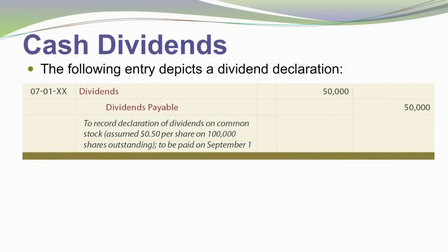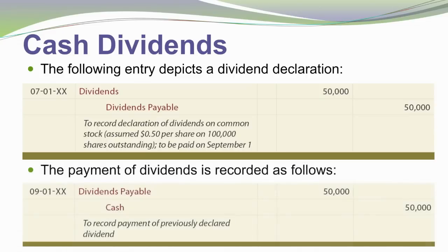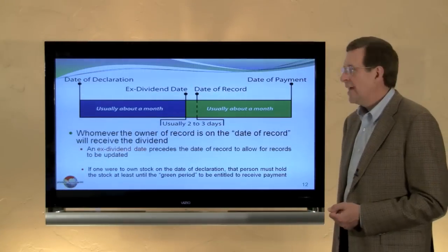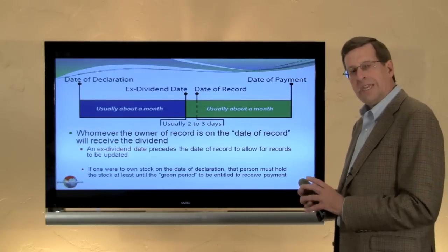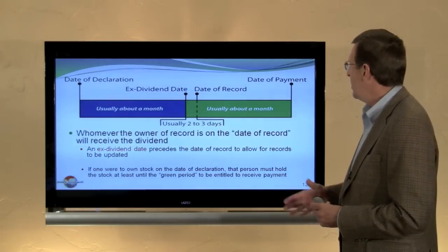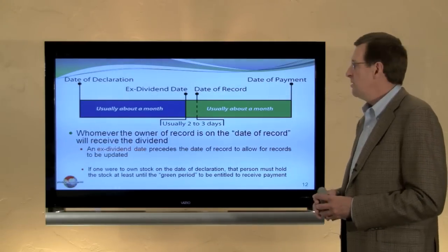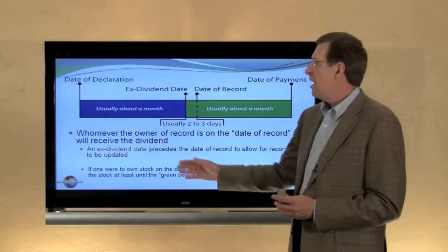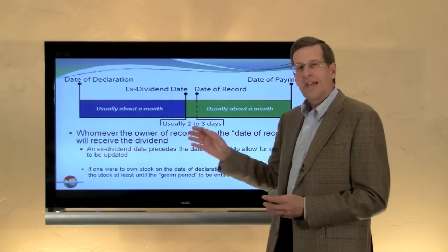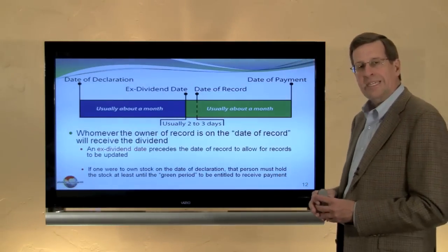Dividends is a direct reduction of retained earnings. On the date of declaration, we debit Dividends and credit Dividends Payable. When the payment occurs, we debit Dividends Payable and credit Cash. In this example there's a two-month lag between the date of declaration and the date of payment. The date of declaration is the day the board acts to declare a dividend. The date of payment is the day they disperse the funds, usually about a month after the date of declaration, up until an ex-dividend date.